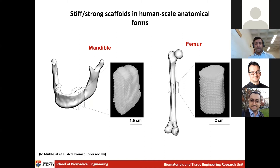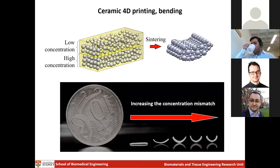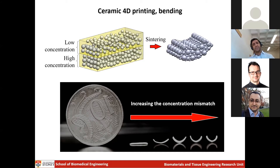While working in the lab, I realized that the amount of shrinkage a ceramic undergoes depends on its concentration of particles. Higher concentration of particles means less shrinkage; lower concentration means more shrinkage. I was thinking: if I print components with different concentrations of ceramic particles in different regions, some regions will shrink more and some less, and that can drive shape changes during sintering — and that is why we call it 4D printing.